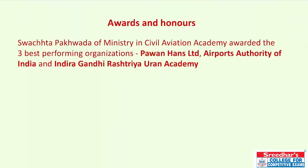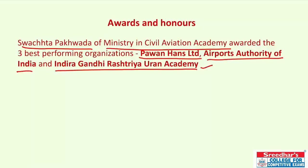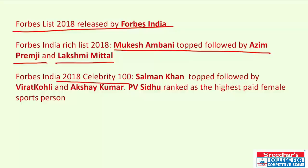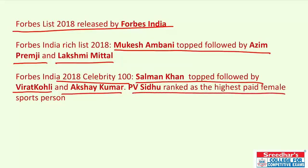In the important awards of December: the Swachhata Pakhwada of the Ministry of Civil Aviation Academy awarded three best performing organizations — Pavan Hans Limited, Airports Authority of India, and Indira Gandhi Rashtriya Uran Akademi. The Forbes India 2018 list was released: India's richest man is Mukesh Ambani, followed by Azim Premji and Lakshmi Mittal. The Forbes India Celebrity 100 top earner is Salman Khan, followed by Virat Kohli and Akshay Kumar. PV Sindhu ranked as the highest female paid sports person.